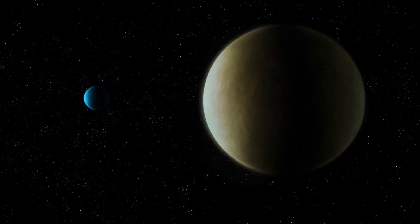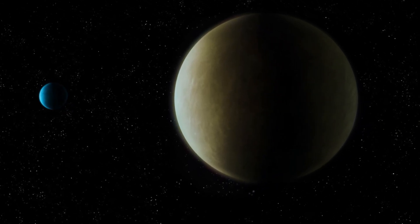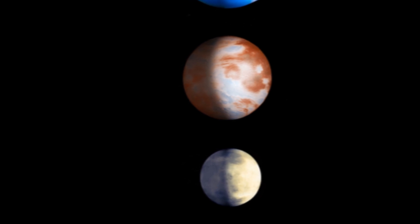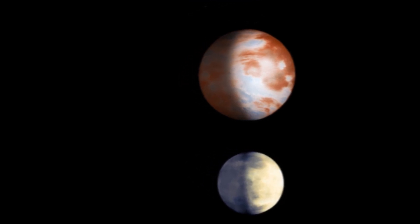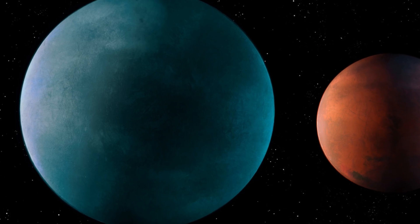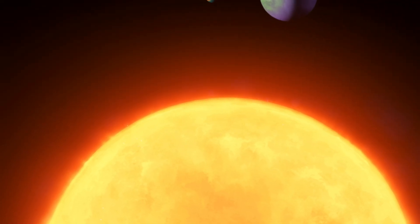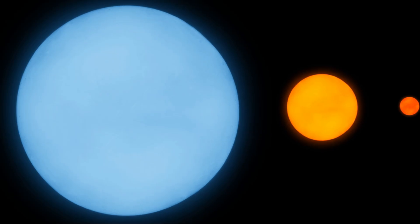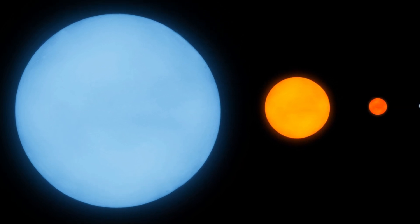Now, the size of this exoplanet is another fascinating aspect. It's similar in size to Earth, which is quite rare. Most exoplanets we've discovered so far are much larger, more like gas giants. This similarity in size suggests that the exoplanet could have a similar structure and composition to Earth.